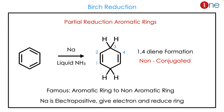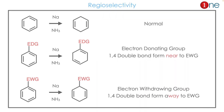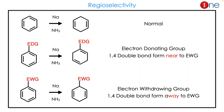What is Birch reduction? It's a partial reduction of an aromatic ring. Basically, the aromatic ring is converted into a 1,4-diene in cyclohexane form, in the presence of sodium and liquid ammonia. The reaction is gaining popularity because the aromatic system goes to a non-aromatic system — stability to instability.